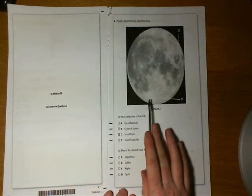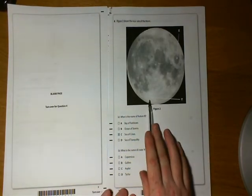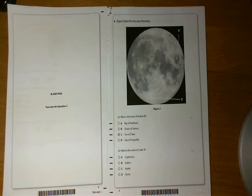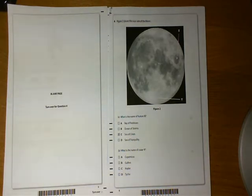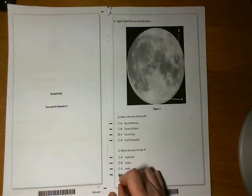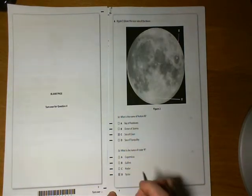What is the name of crater Y at the bottom of the moon? A. Copernicus, B. Galileo, C. Kepler, or D. Tycho. The answer is D, Tycho.